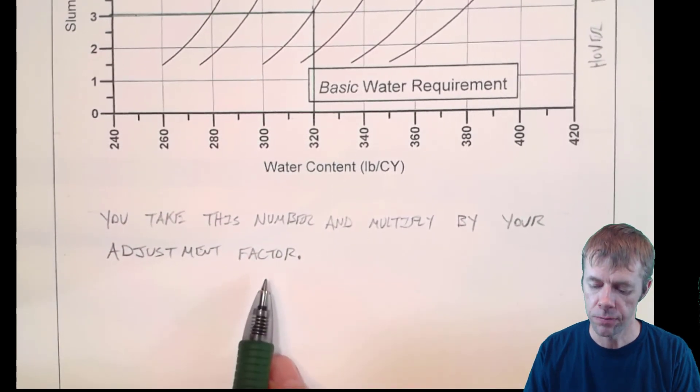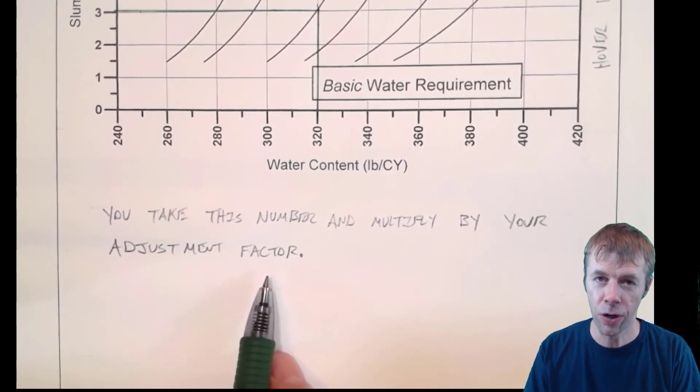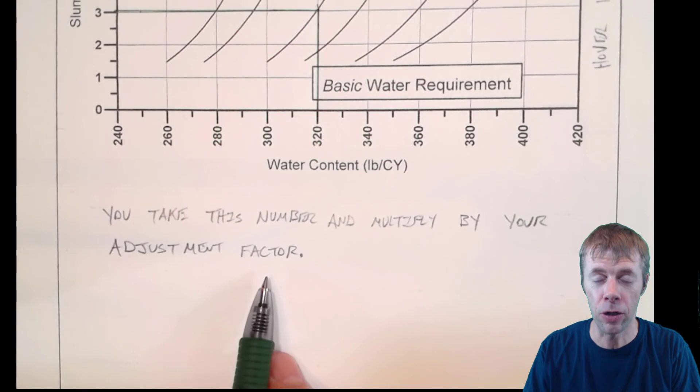I told you about that water reduction factor. This is where you would reduce it. You would take 320, multiply by 0.8 or 0.7 or perhaps even larger than one if you've got some really bad things happening to your concrete mixture, and you modify it from there.